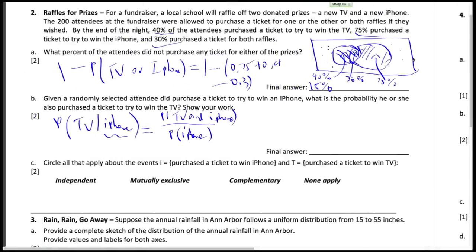Okay, so these probabilities work out to be 0.30 over 0.75, which is, the final answer, 0.4.